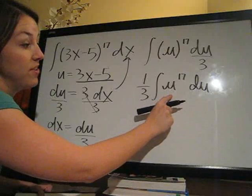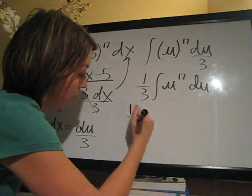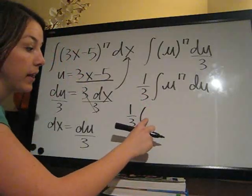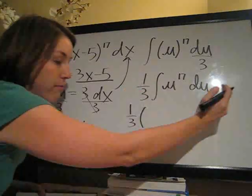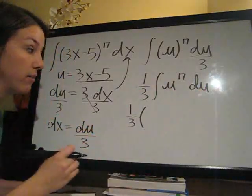And then this, of course, u to the 17 is really easy to integrate. It's the 1 third here. We always draw an open parenthesis so that we know that the 1 third is multiplied by everything that we take the integral of, since we pulled it out as a constant.